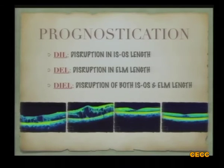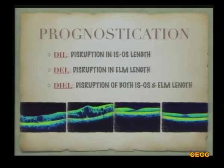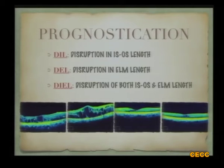Prognostication is possible with OCT images using three markers: DIL (disruption of the inner segment/outer segment junction), DEL (disruption of the external limiting membrane), and DIAL (disruption of both). If the patient has only one of these disruptions, prognosis is better than if both are disrupted.